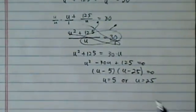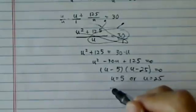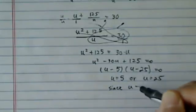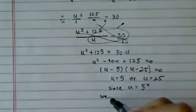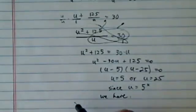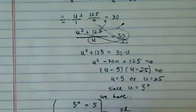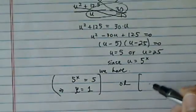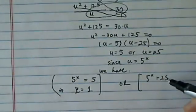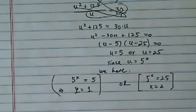So u equal to 5, or u equal to 25. Since u is equal to 5 to the x, we have two parts. We have 5 to the x is equal to 5, which gives us x equal to 1. Or we have 5 to the x is equal to 25, and x, of course, is equal to 2.